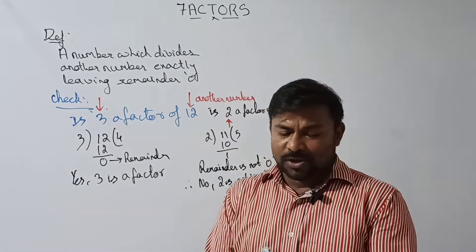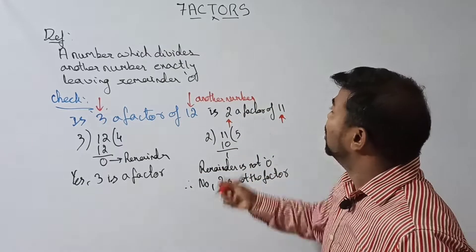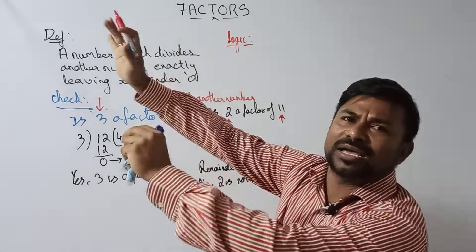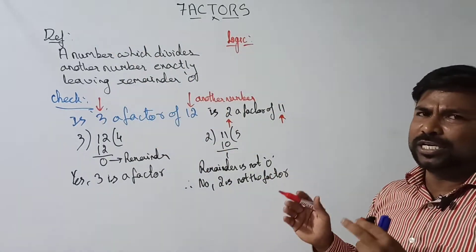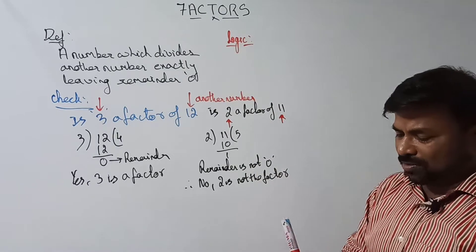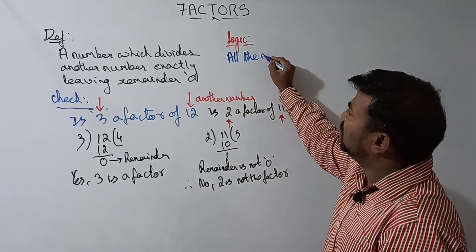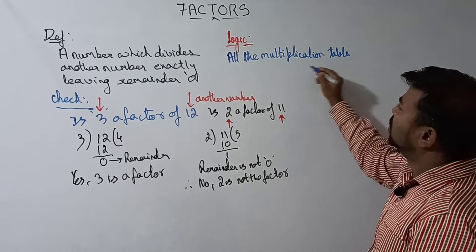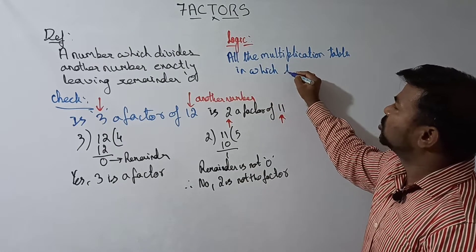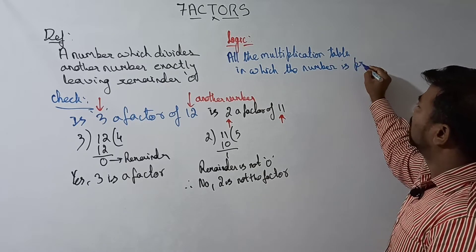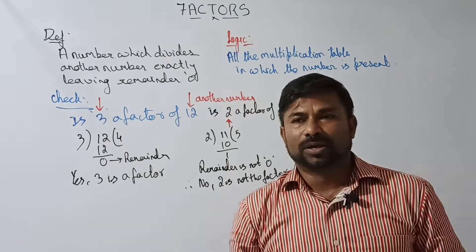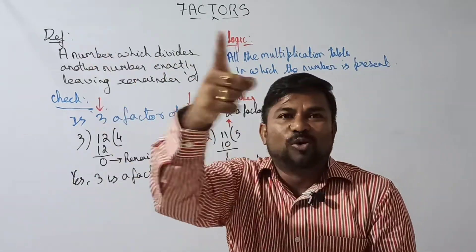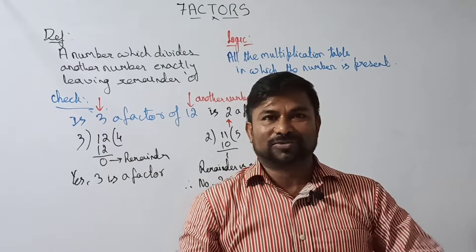To make you better understand, I am giving a logic. All the multiplication tables in which a number is present — all those table numbers are the factors of that number. Suppose you take a number 4 — in which tables is it present? All those numbers are the factors of 4.